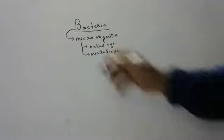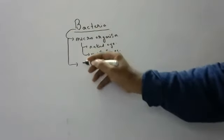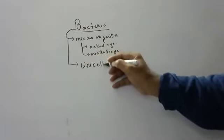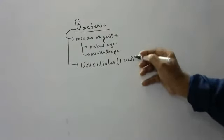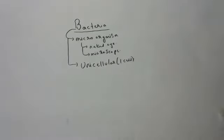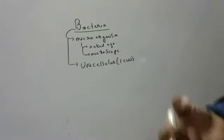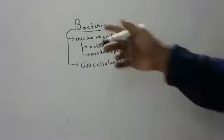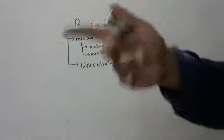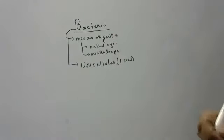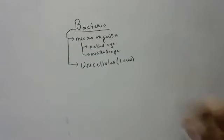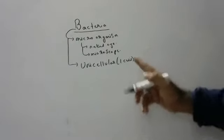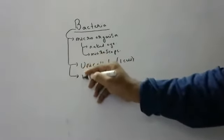Coming to their properties, bacteria are majorly unicellular — only one cell is present. That one cell does all activities. Our body has millions and trillions of cells, but bacteria has only one cell. And yet, see how much it scares us — if we get a little fever we take antibiotics to kill the bacteria. With just one cell it can scare us. Bacteria are unicellular, and they are the smallest and oldest organisms.